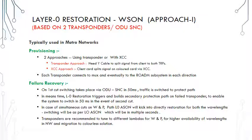Let us discuss layer 0 restoration, also called WSON — wavelength switched optical networks. There are two approaches to build it. The first approach is based on deploying two transponders. In the two-transponder case there are two sub-approaches: one is a splitter-based architecture where no cross-connect capable box is needed — just a Y-cable is sufficient to split the signal from the client to both transponders. In the cross-connect approach, we need a heavier box with a central cross-connect where any client can be mapped to any line card.